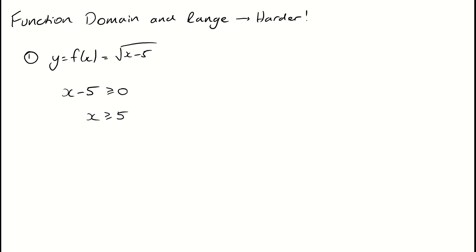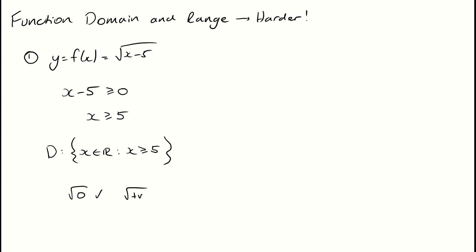So the domain of this function is such that x is a real number where x is greater than or equal to 5. We can check that: if we put in 5, we take the square root of 0, which is our absolute limit. And if we put in any number bigger, we're just taking the square root of a positive number, which gives us a positive number back.